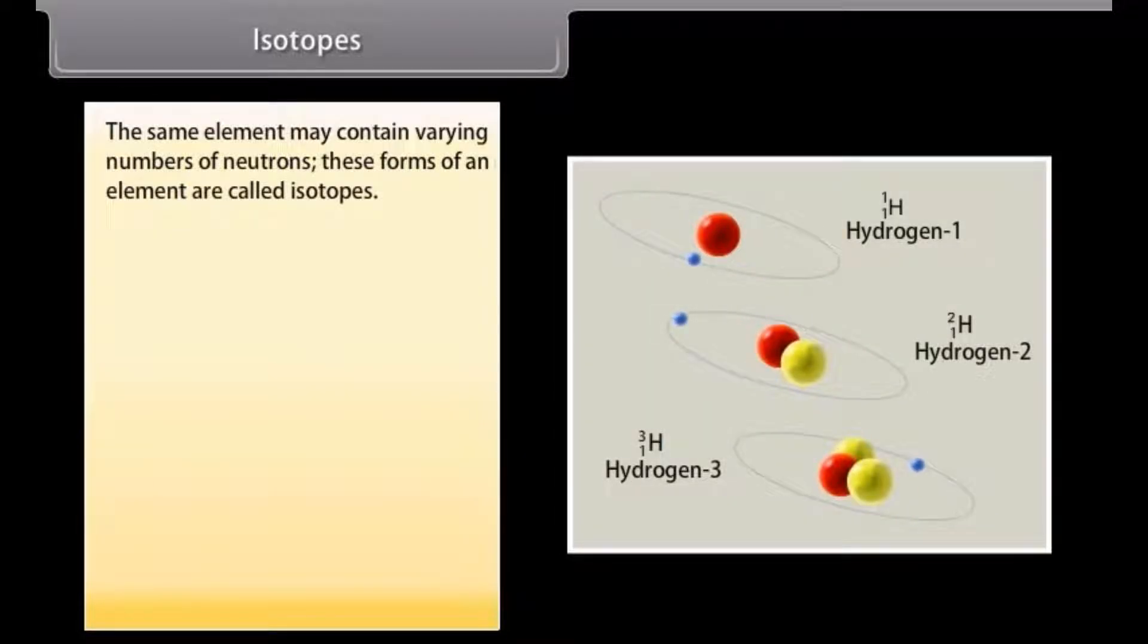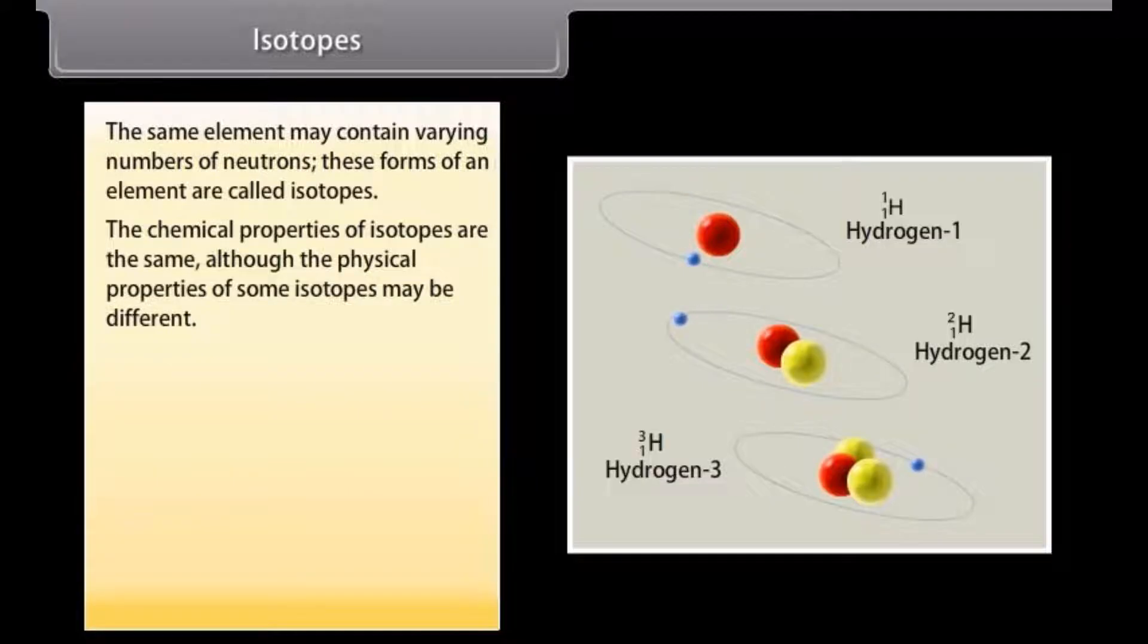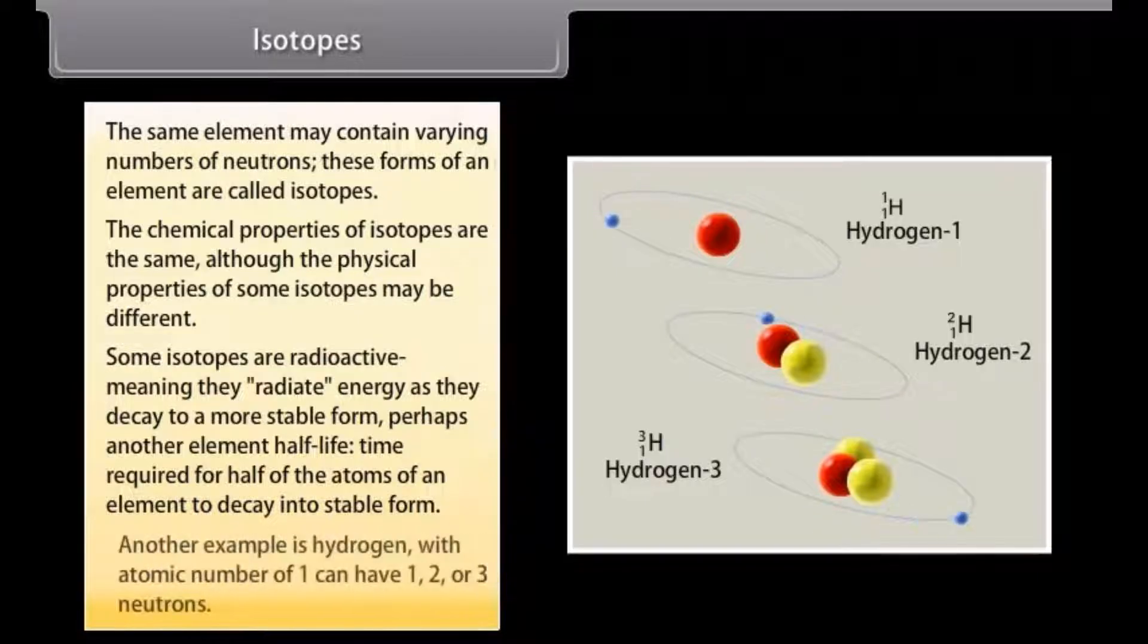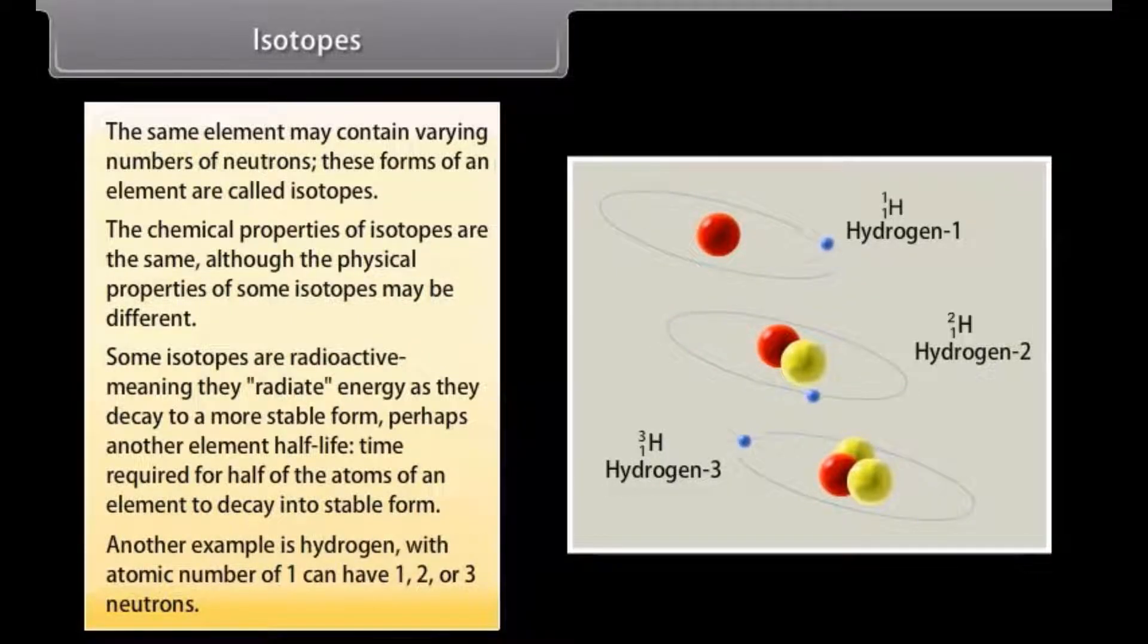Isotopes. The same element may contain varying numbers of neutrons. These forms of an element are called isotopes. The chemical properties of isotopes are the same, although the physical properties of some isotopes may be different. Some isotopes are radioactive, meaning they radiate energy as they decay to a more stable form, perhaps another element half-life. Time required for half of the atoms of an element to decay into stable form. Another example is hydrogen, with atomic number of 1, can have 1, 2 or 3 neutrons.